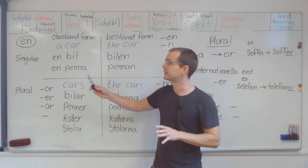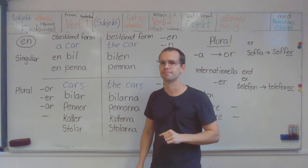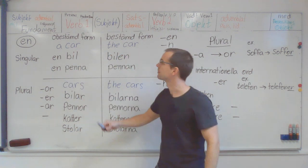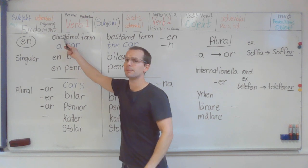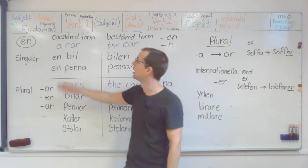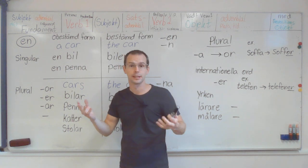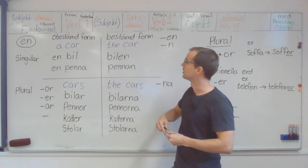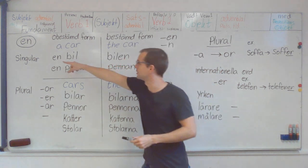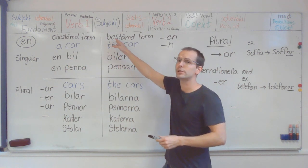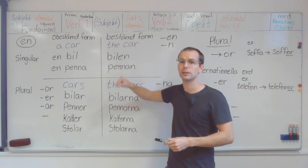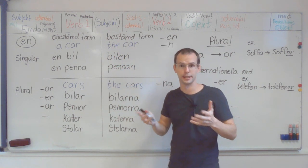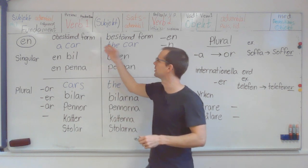So we have this grid and here we have singular, obestämd form, undetermined, which is the same as a car in English. Here we have also singular and what we call determined form, bestand form, which is the car in English. So a car, the car.